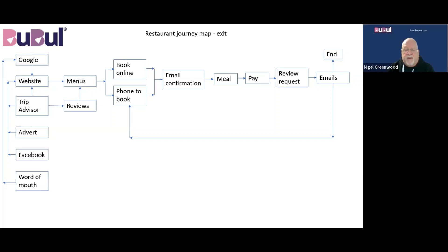What you can also do on the journey map is map the issues. In this case we've done it with warning triangles — you can number each of these and detail them separately — but the idea is to create a really clear picture of what the customer journey is and where the issues lie. As examples: the Facebook page hasn't been kept up to date, there have been some poor reviews that haven't been answered by management, when you phone to book it's very difficult to get through, the meal and service weren't great, and the emails are not as informative or useful as they could be.